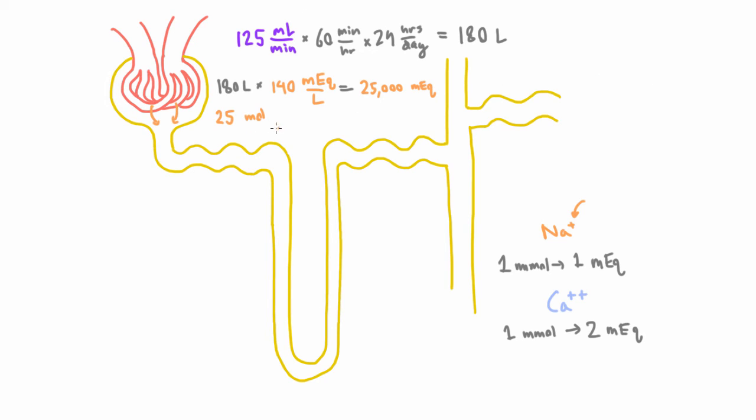So if we want to know how many grams of sodium that is, we need to multiply by the molecular weight, which is 23 grams per mole. And we're going to find that this whole thing gives us about 580 grams. So that's like about half a kilogram, in other words, it's about a pound. So that means that every day a pound of salt is going to get filtered here at the glomerulus.